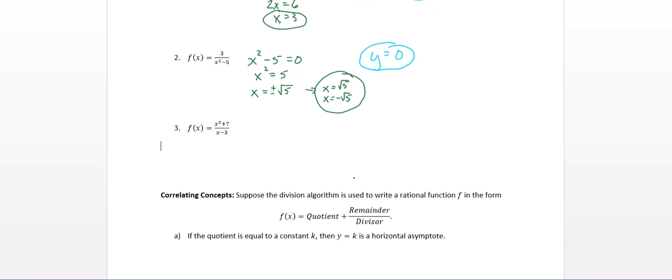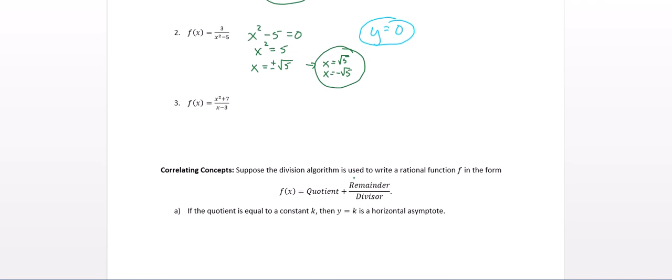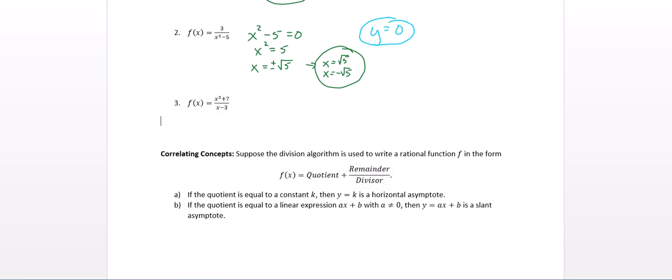Alright, let's do one more. So if we look at our vertical asymptote, our denominator, set equal to 0 and solve, x equals 3. For our horizontal asymptote, notice the degree of the denominator is less than the degree of the numerator. No horizontal asymptote. That would be our answer. There isn't one. But check this out. Suppose we actually divide these, and we write our answer as quotient plus remainder over divisor. If the quotient is equal to k, then we'll have a horizontal asymptote. If the quotient is equal to a linear expression, then we have a slant asymptote. So let's take a look at that.